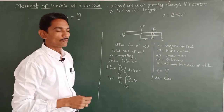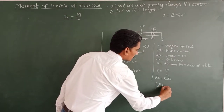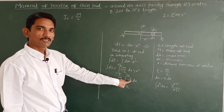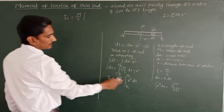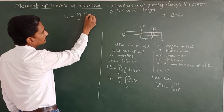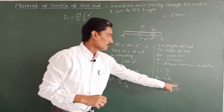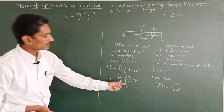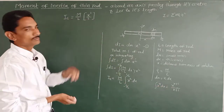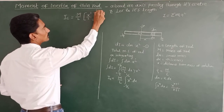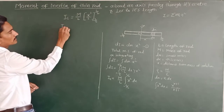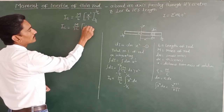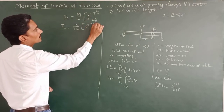The moment of inertia IC equals M upon L times the integration of x squared dx. Using the integration formula: the integration of x^n dx equals x^(n+1) upon (n+1). Here x squared has power 2, so the integration of x squared dx equals x cubed upon 3. Therefore IC equals (M/L) times x cubed upon 3, with limits from minus L/2 to plus L/2.